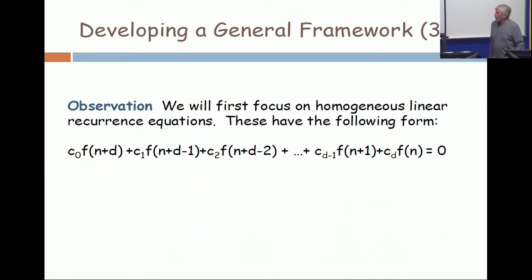We're going to first focus on what are called homogeneous linear recurrence equations. These have the form: a constant times f of n plus d, plus another constant times f of n plus d minus 1, all the way out to some constant times f of n equals 0.